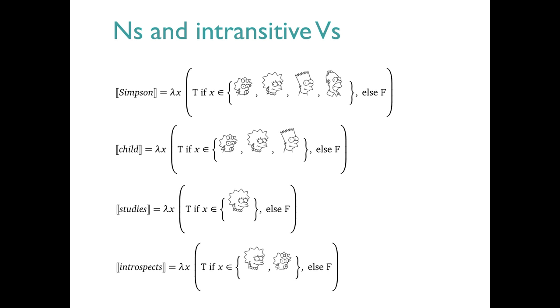Here's a couple of V examples. They have the same shape as the ends. They name different sets, that's all.